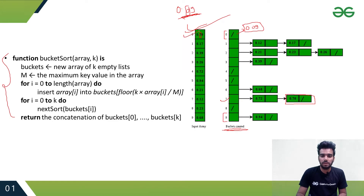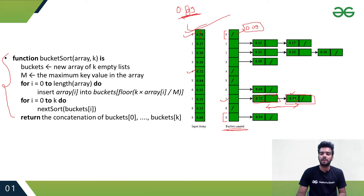You can also see there are two values in bucket seven: 0.78 came first and then 0.72. We sort these within the bucket — we can use any sorting method, or we can use bucket sort again on the second digit. So we do another sorting step individually within each bucket.